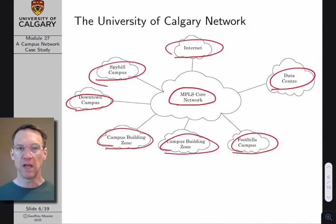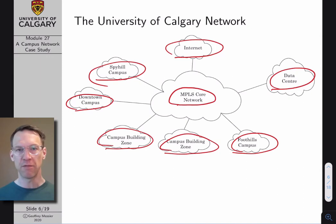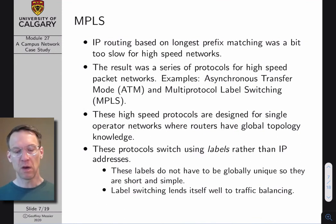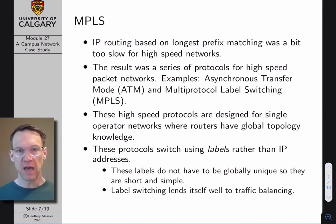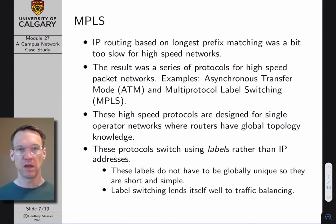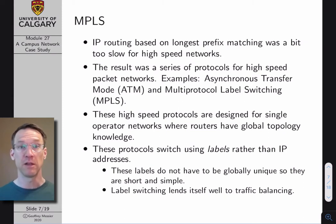Most major networks will essentially have a high-speed core network supporting most of the traffic moving between different parts of the network, with lower-speed components plugging into that core. The standard the U of C has chosen for its core network is MPLS. IP routing, which we've already studied, is based on looking at an IP address, comparing it to entries in our routing table, finding the longest prefix match, and using that to determine the next hop for the IP packet. Back when routers were slower, this was seen as an expensive operation.